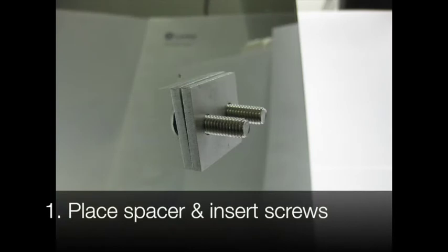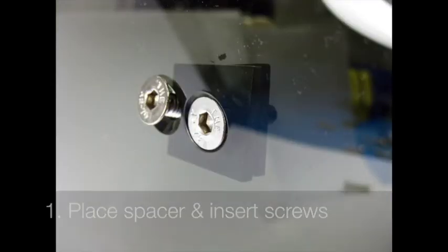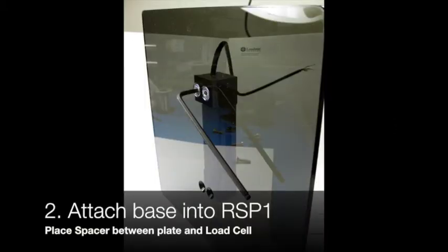And here's how you do it. You first insert the spacer behind the plates and then screw in the screws and attach it to the base of the load cell.